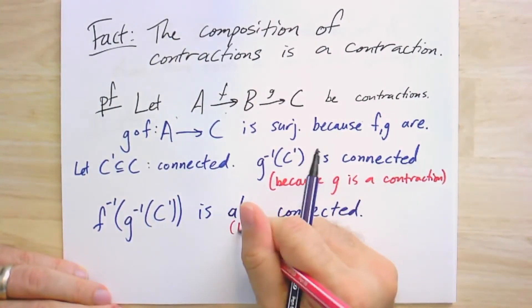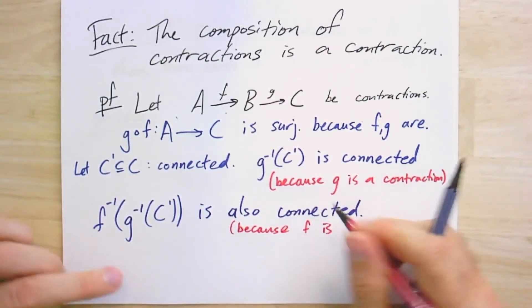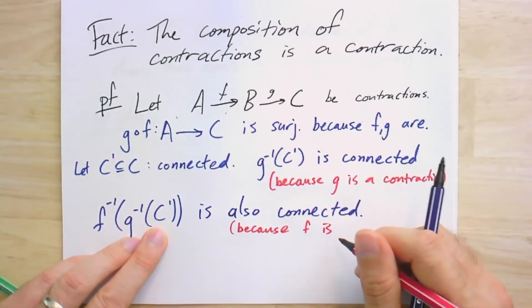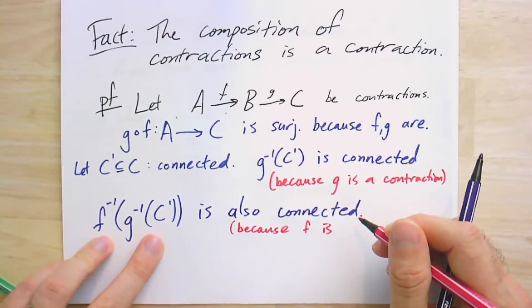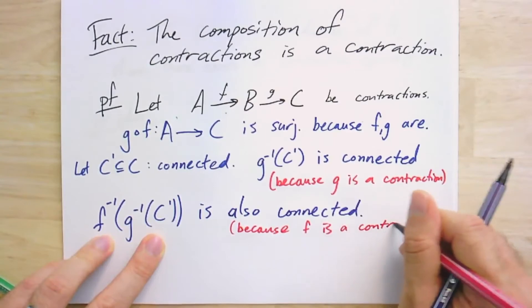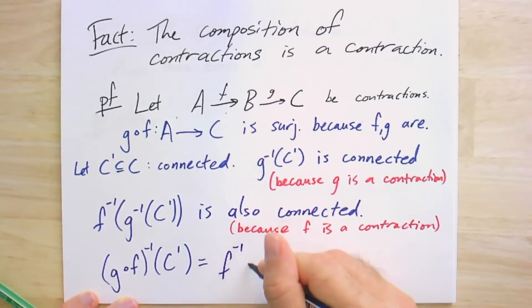F is a contraction. The preimage of C prime is connected, so its preimage under F is also connected. And that now finishes it for us because, in fact, G compose F, the preimage of C prime, is just equal to the preimage of the preimage of C prime.